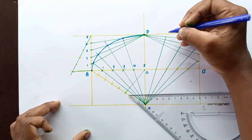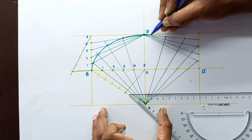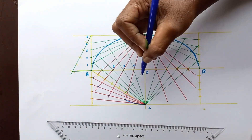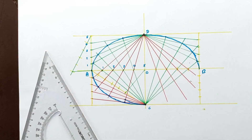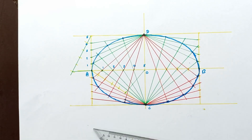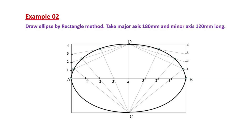In this video I'm going to explain how to construct an ellipse using the rectangle method. Draw an ellipse using the rectangle method, taking the major axis as 180 millimeters and the minor axis as 120 millimeters. As the first step, you should draw the rectangle with 180 millimeter length and 120 millimeter width.